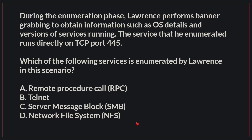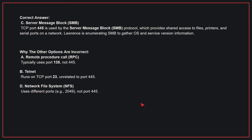During the enumeration phase, Lawrence performs banner grabbing to obtain information such as OS details and versions of services running. The service that he enumerated runs directly on TCP port 445. Which of the following services is enumerated by Lawrence in this scenario? The correct answer is C, SMB. TCP port 445 is used by the SMB protocol, which provides shared access to files, printers, and serial ports on the network. Lawrence is enumerating SMB to gather OS and service version information.